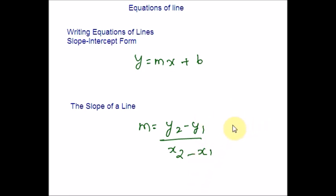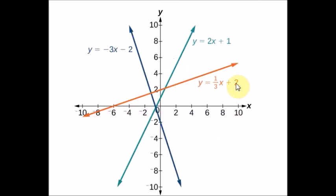Let me show you some examples. Let me display the graph. The lines indicate the following slopes: m = −3, m = 2, and m = 1/3. Do you see these lines for the given equations?